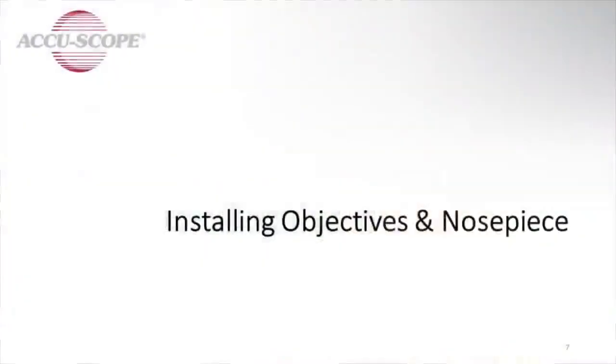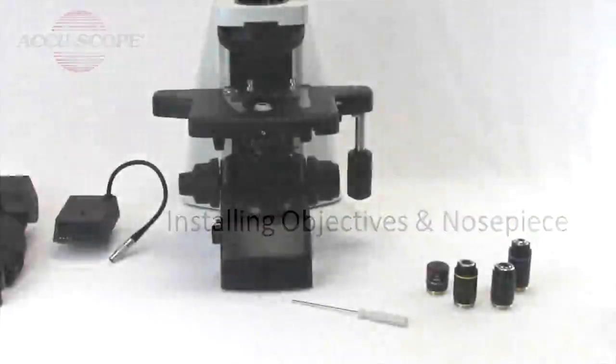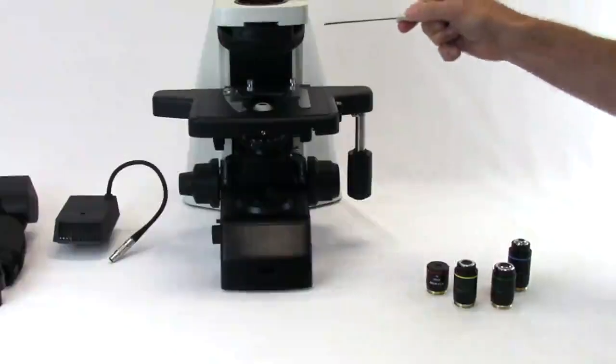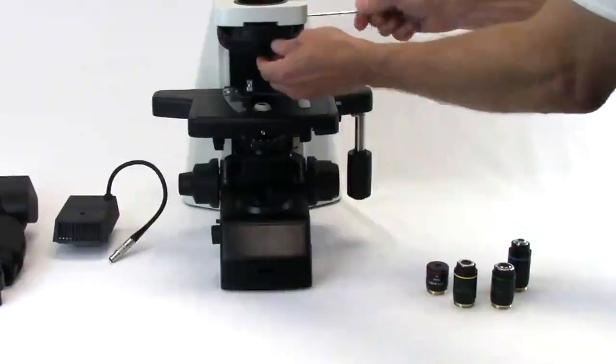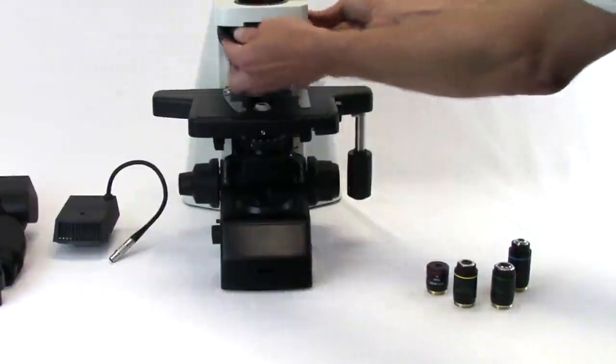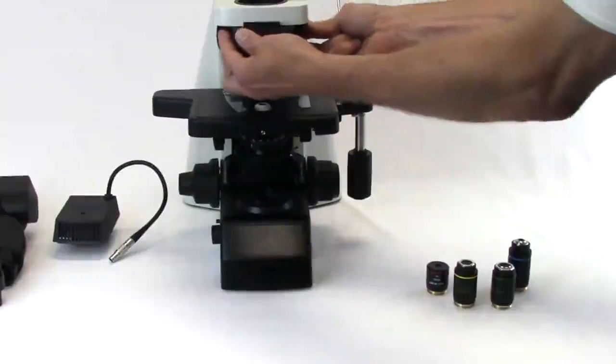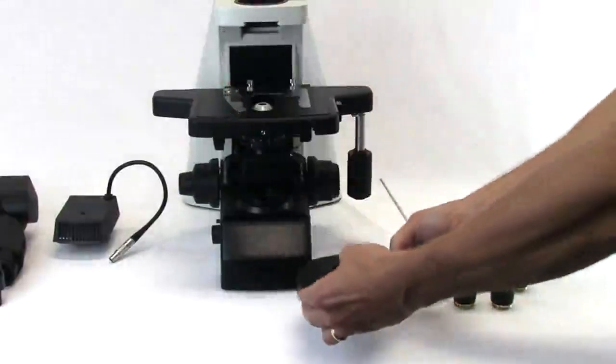Installing the objectives and nose piece. Using the hex wrench, loosen the lock screw and slide the nose piece toward the front of the microscope to remove it. Turn the nose piece over so that the dovetail is down.